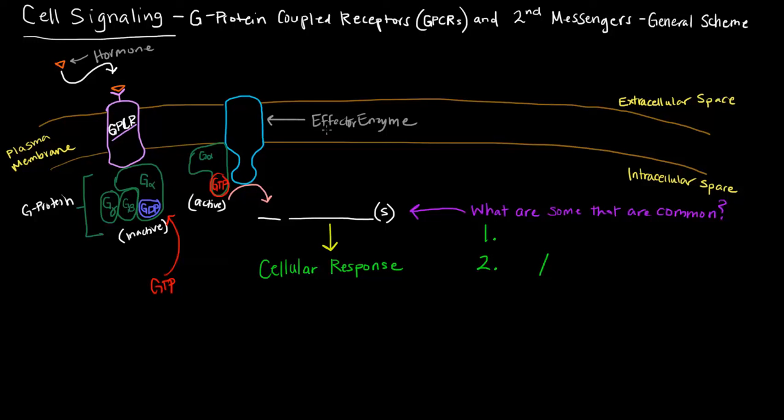Once this effector enzyme is active, what it does is it creates second messengers. Those things trigger a certain cellular response. And that's the general scheme of a G-protein coupled receptor.